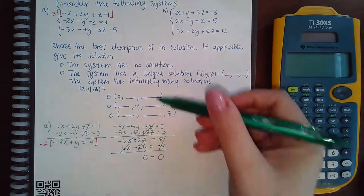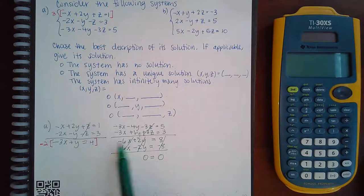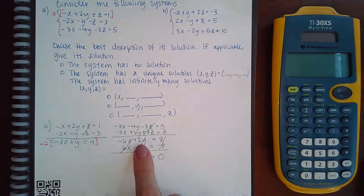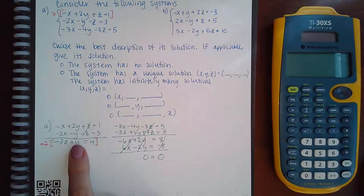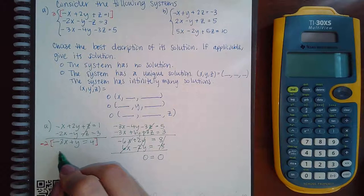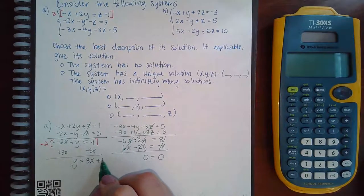I have infinitely many solutions — but which of the three options do I choose? I need to look at the two equations from when I eliminated one variable, and find whichever variable looks easiest to isolate. The easiest one to isolate is the variable with a positive one coefficient. So I'll isolate that variable by adding three x to the other side, giving me y equals three x plus four.